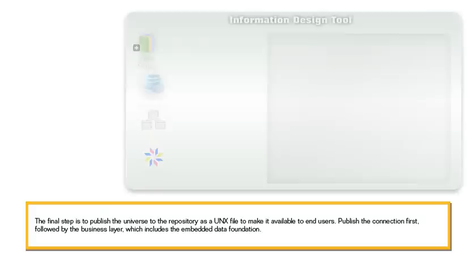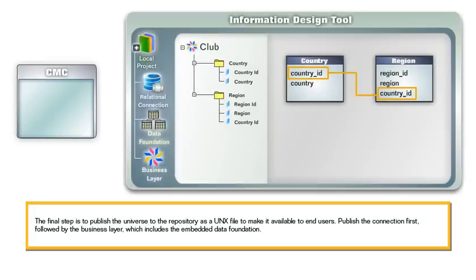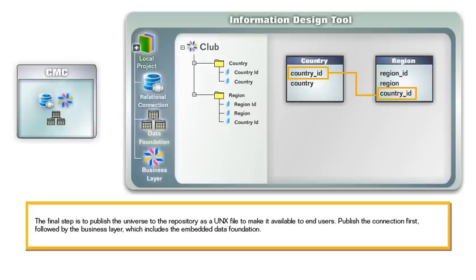The final step is to publish the universe to the repository as a UNX file, to make it available to end users. Publish the connection first, followed by the business layer, which includes the embedded data foundation.